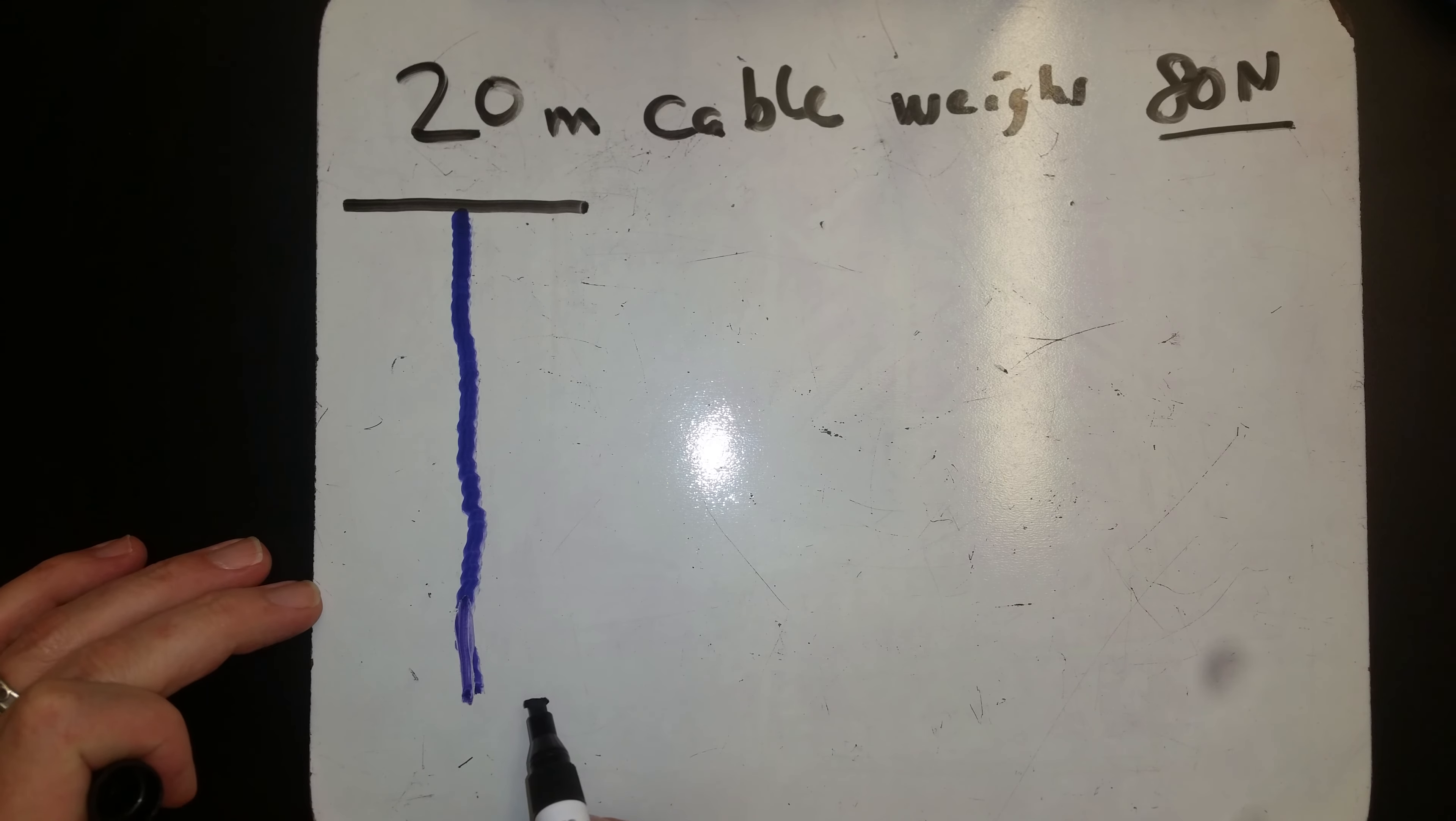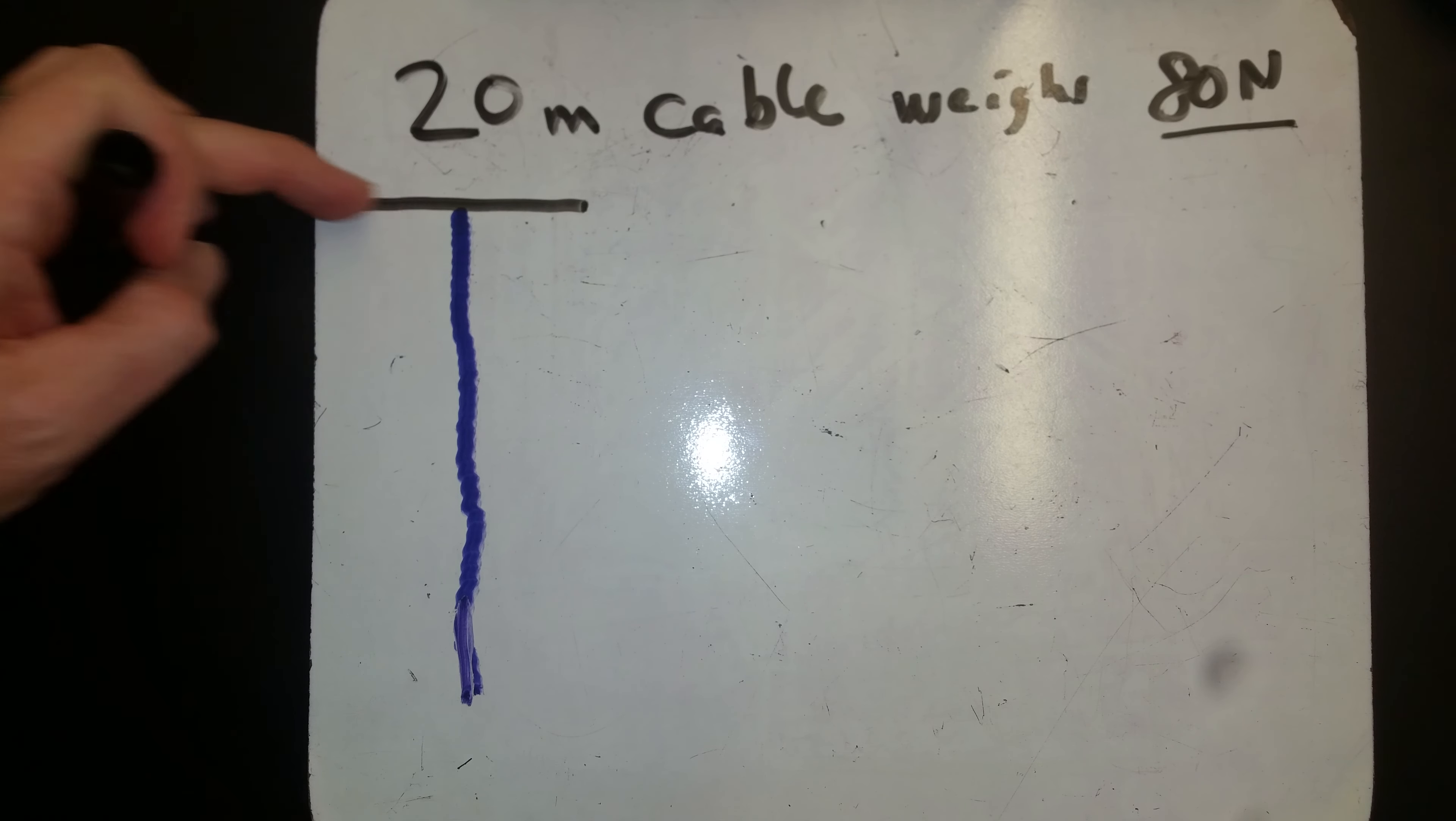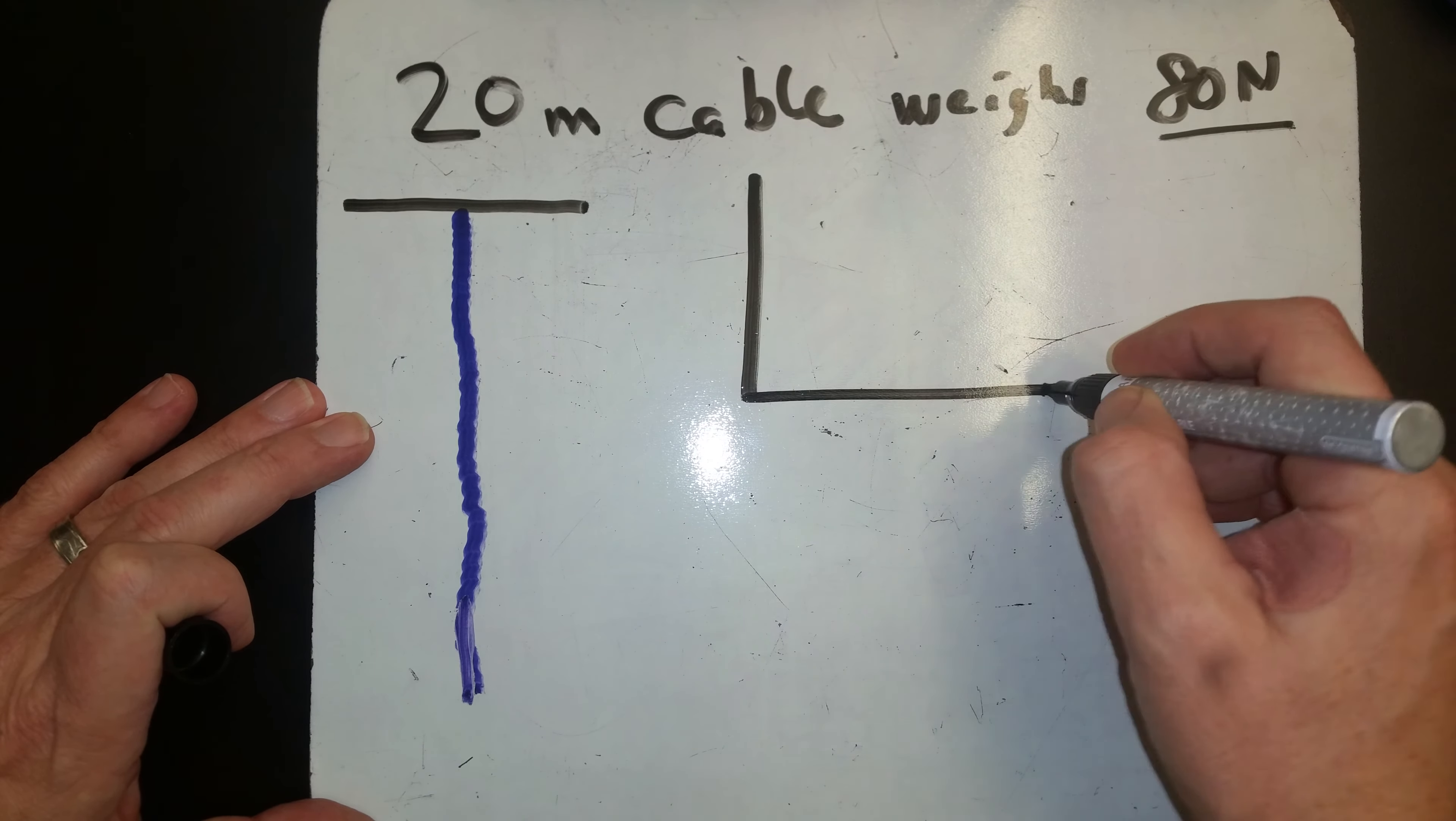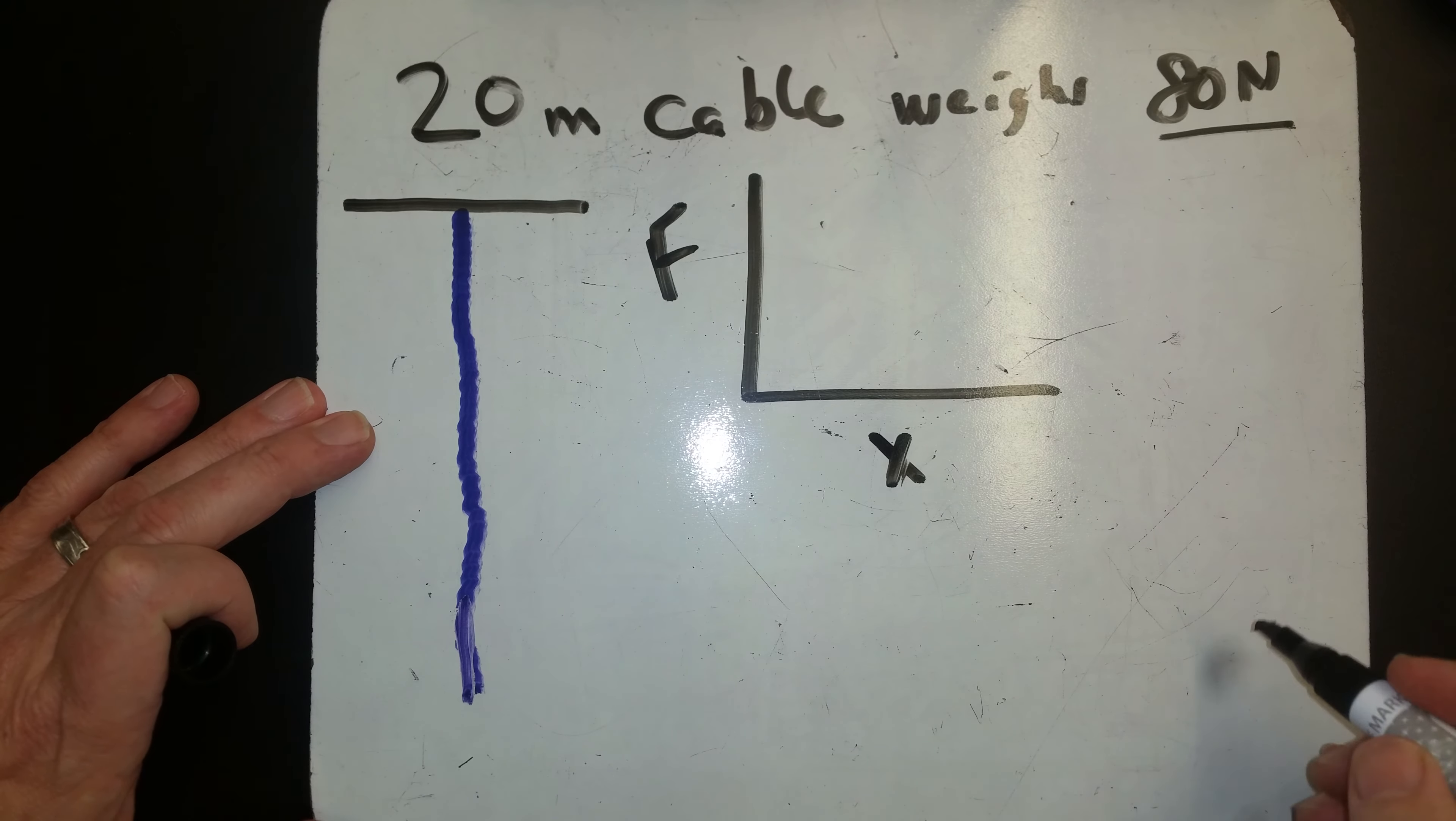If it were bundled at the bottom, the amount of work would just be 80 times 20 or 1600. But as we pull it up we no longer have to pull the cable at the top. So we have to look at our relationship here between the force and how much we've pulled up.